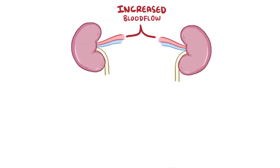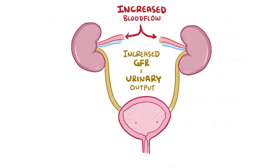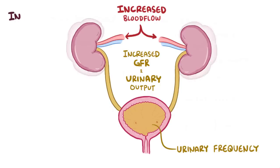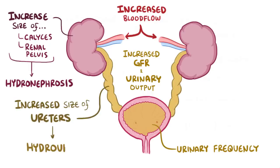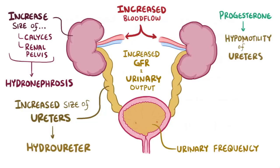The increased cardiac output also means that there's more fluid going through the kidneys, increasing the glomerular filtration rate and urinary output. Combining that increased urine output with direct pressure on the bladder from the enlarging uterus explains why pregnant women have urinary frequency. The kidneys compensate for the extra workload by increasing in size, causing the calyces and renal pelvis to dilate, resulting in physiologic hydronephrosis, and increasing size of the ureters, causing physiologic hydroureter. In addition, progesterone causes hypomotility of the ureters, and the increased capacity to store urine along with that hypomotility results in urinary stasis in the kidneys, increasing the risk of an upper urinary tract infection.